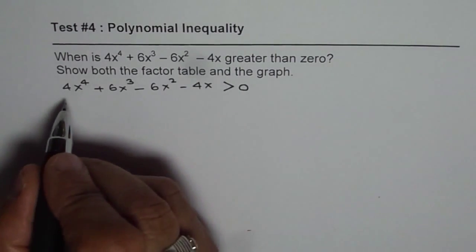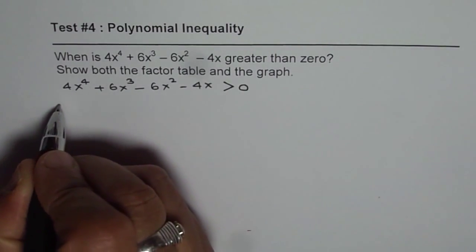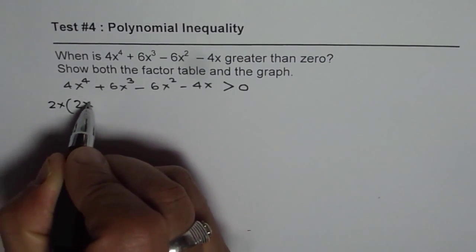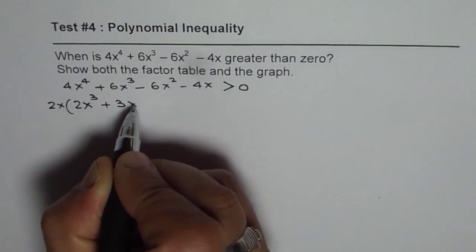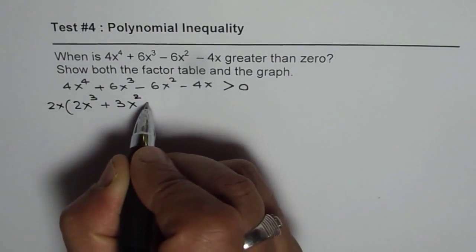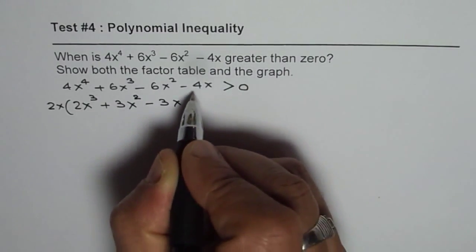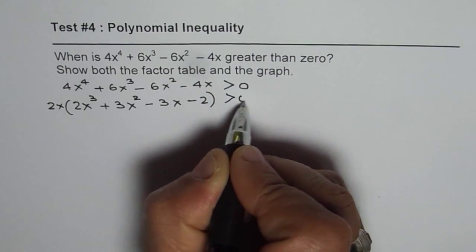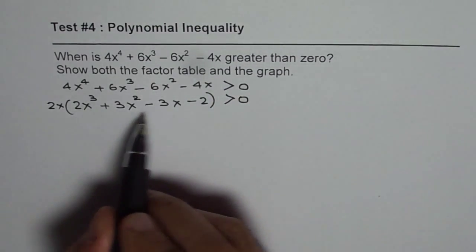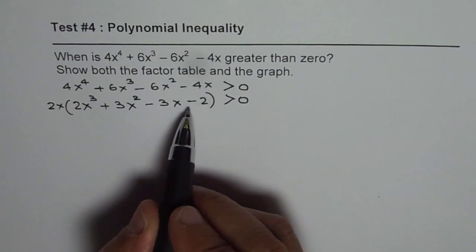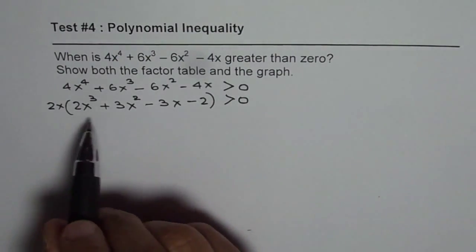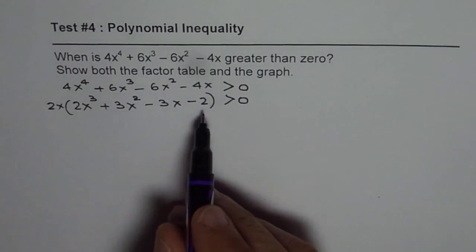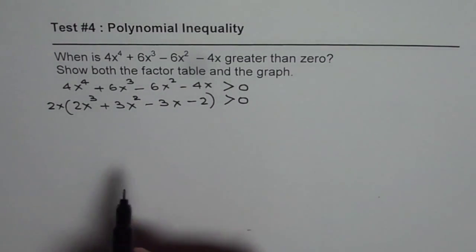So let's factor it. We can see that 2x is common, so let's factor out 2x first. We get 2x times 2x cube plus 3x square minus 3x minus 2 should be greater than 0. Now we have a polynomial of degree 3 whose constant is minus 2. So we can try plus minus 1, plus minus 2 and see which one gives us 0.